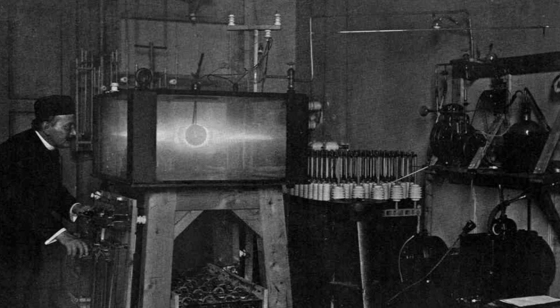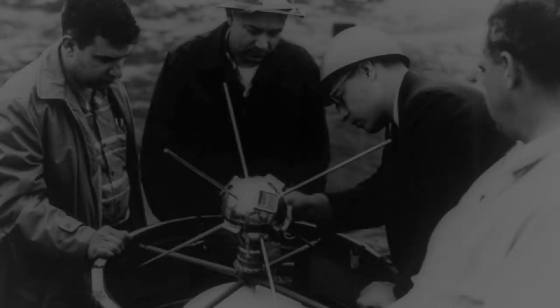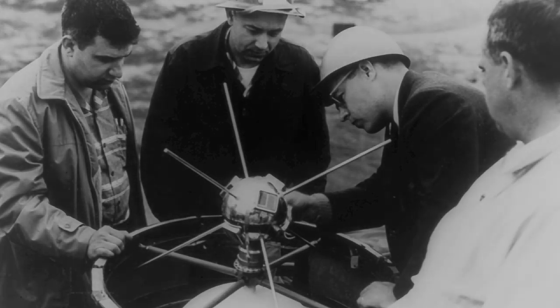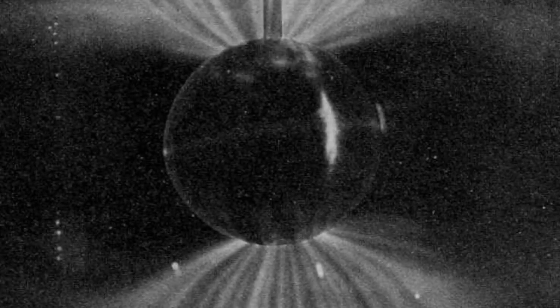Despite how sound Birkeland's research was, at the time, he was ridiculed for his theory. It wasn't until 1967 that his theory was confirmed, after the U.S. Navy satellite 1963-38C used a magnetometer in the ionosphere to detect magnetic disturbances. Disturbances were observed whenever the satellite passed over the regions of the Earth that were polar. The magnetic disturbances were later determined to be caused by the field-aligned electric currents that Birkeland had predicted, and so now they are called Birkeland currents.